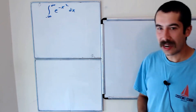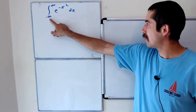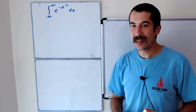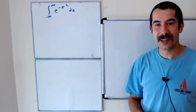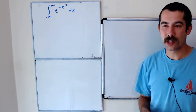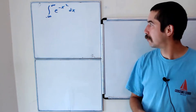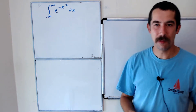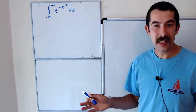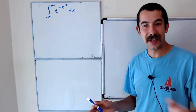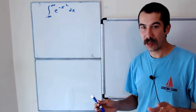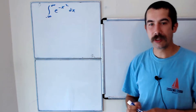Today we're going to evaluate the integral from negative infinity to infinity of e to the negative x squared dx. This question was suggested by a subscriber named Cookie Man, so thank you Cookie Man. Try this on your own — it's going to take some Calc 3 techniques to solve, so keep that in mind. Or you can just watch me solve it.